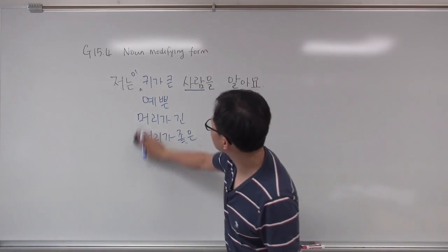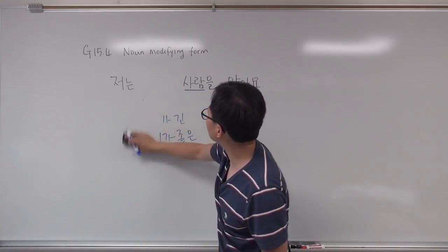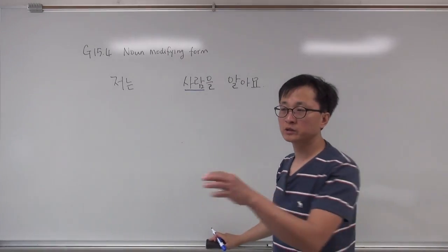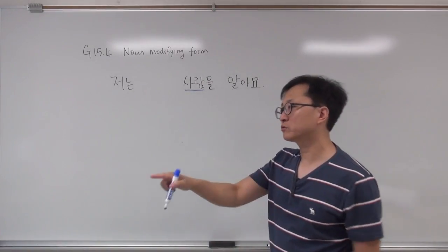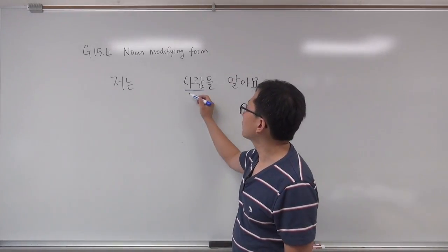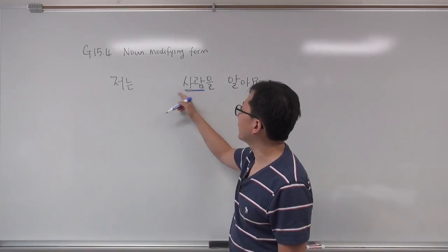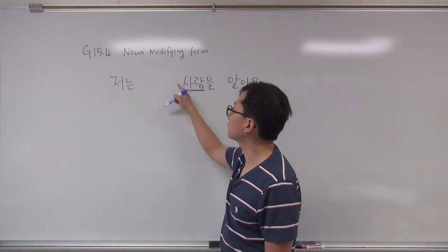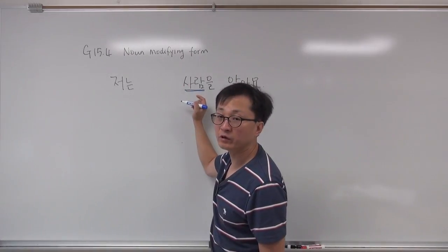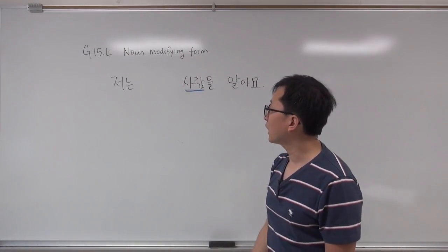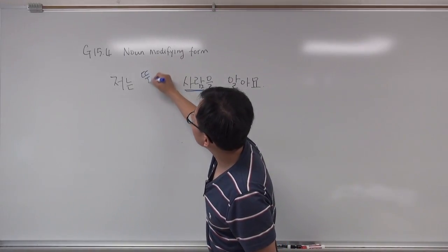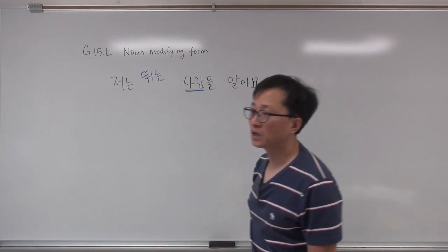And what about verbs? 저는 사람을 알아요. You are watching a video and there is somebody who is running. I know this running person — the person who is running. In Korean, you have to add information for this noun right in front of that noun. 뛰는 사람을 알아요 — 뛰다 becomes 뛰는.